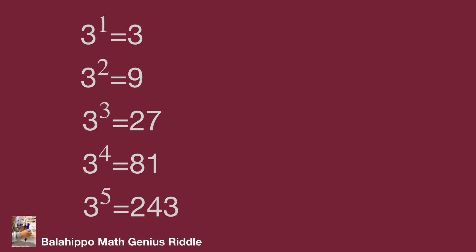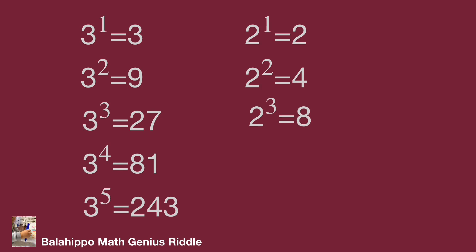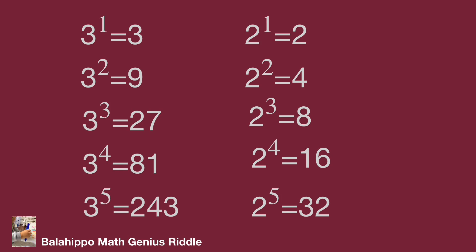Now let's check the last digit of 2 power A. 2 power 1 equals 2, last digit is 2. 2 squared equals 4, last digit is 4. 2 cubed equals 8, last digit is 8. 2 power 4 is 16, last digit is 6. 2 power 5 is 32, last digit is 2. We also find there is a cycle for the indices: the last digits are 2, 4, 8, 6, then 2, 4, 8, 6.